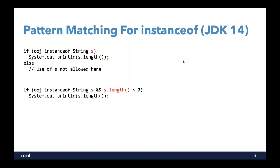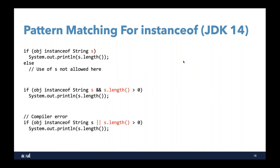We can be more sophisticated and add another test. We could say: if obj instanceof String s && s.length() > 0. This works because the && operator evaluates the left side first, and only if that's true evaluates the right side — so s is valid when we test the length. However, if we were to try that with the || operator, it wouldn't work because if the left side evaluated to false, we don't have a String, so the scoping of s is not valid. The compiler would recognize that and give us a compiler error.